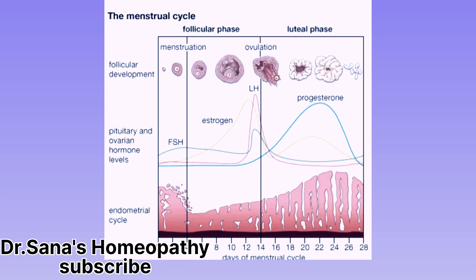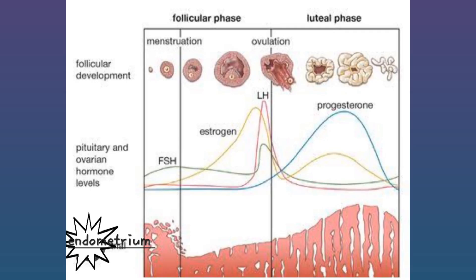The eggs release estrogen hormone, which helps in maturation of follicles for fertilization. In the next 15 days of the menstrual cycle, luteinizing hormone (LH) releases from the pituitary gland, enters the female reproductive system through blood, and releases progesterone hormone. Progesterone handles GnRH frequency, and if LH levels are disturbed, it leads to polycystic ovarian disease.